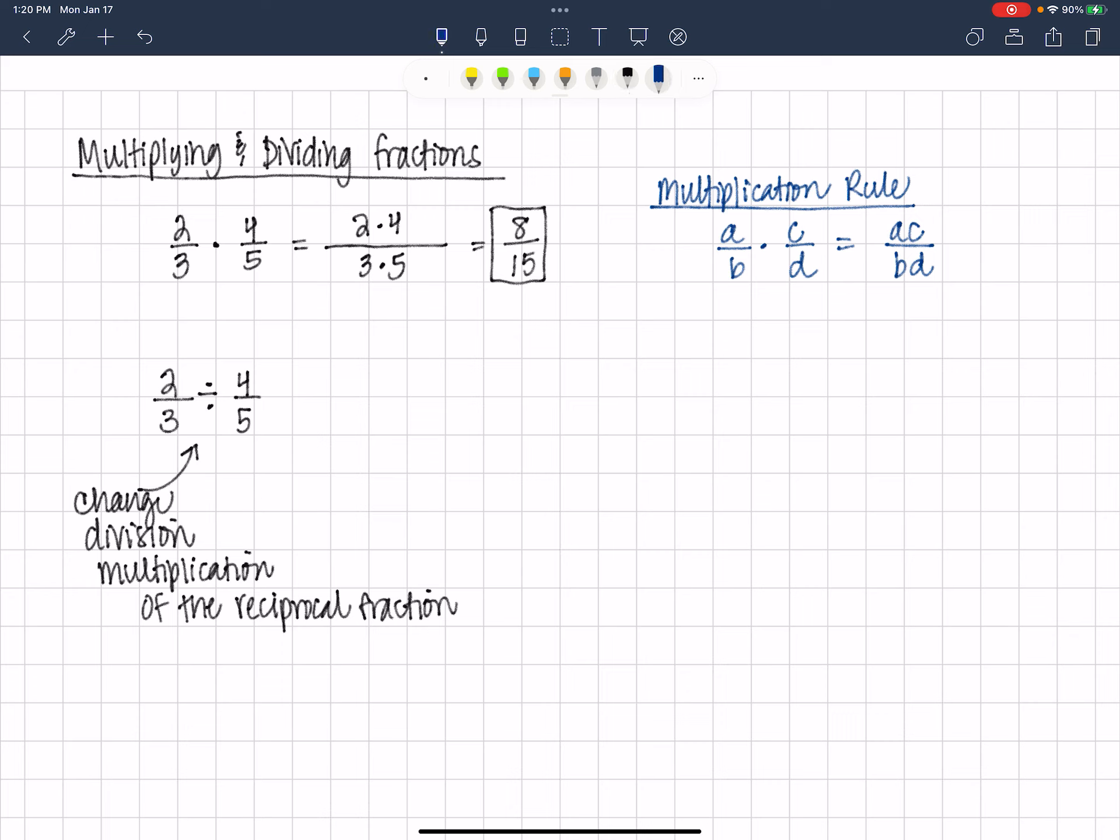So when we have a division problem, 2 thirds is called the dividend. Divided by 4 fifths, that's called the divisor. So you can think of this as multiplying. Division is the same as multiplying by the reciprocal of the divisor. And this works all the time. Division is equal to multiplying by the reciprocal of the divisor.